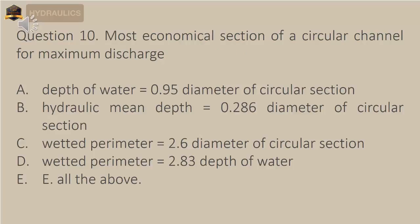Question 10: Most economical section of a circular channel for maximum discharge — A) depth of water equals 0.95 diameter of circular section, B) hydraulic mean depth equals 0.286 diameter of circular section, C) wetted perimeter equals 2.6 diameter of circular section, D) wetted perimeter equals 2.83 depth of water, E) all of the above.